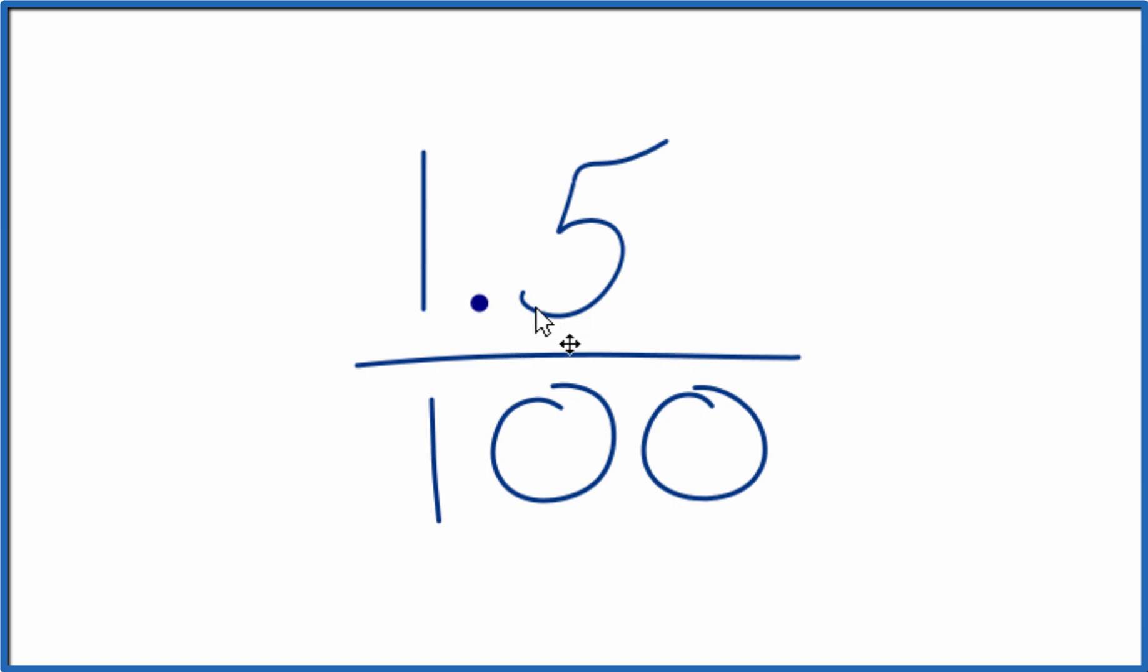It's probably better not to have a decimal point here in our numerator. And if we move this to the right, that'll give us a whole number. We do need to move the decimal point here to the right as well, which would just mean we add a zero. So now we have 15 over 1,000, and that is a fraction.